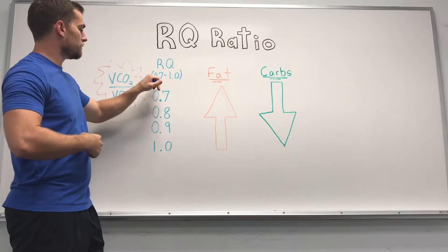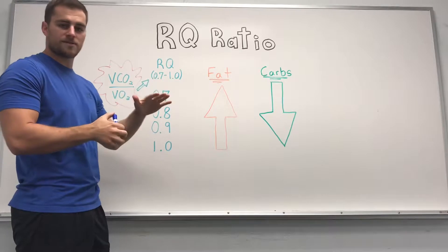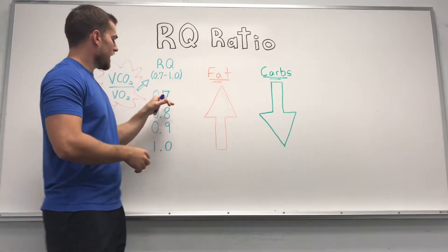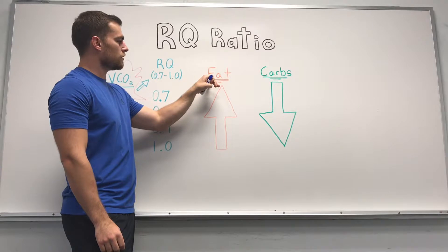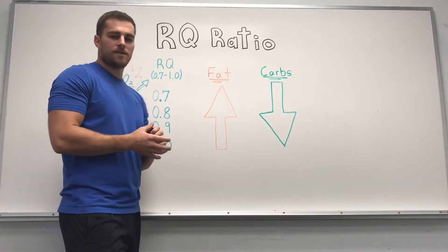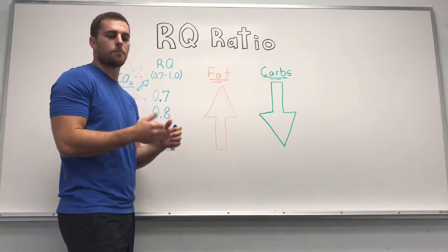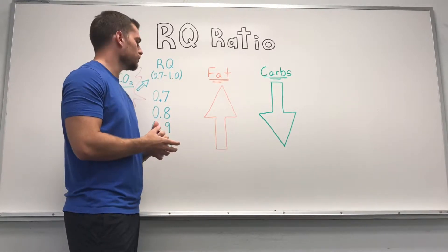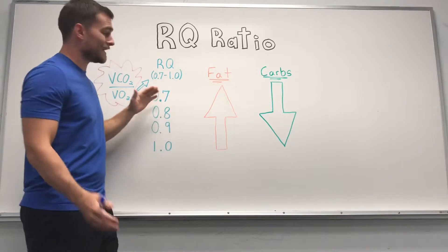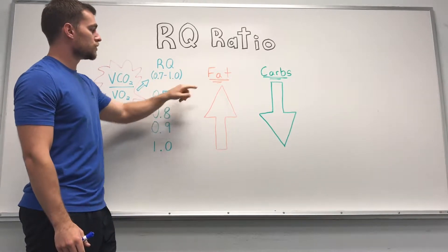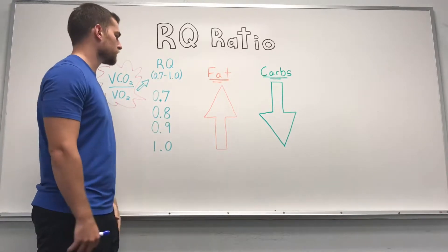RQ is measured from 0.7 to 1.0. At 0.7, on the lower intensity end, you're going to be primarily fat-fueled. Activities where this applies include slow jogging, bike riding, swimming — anything you can maintain for a really long time. Your RQ ratio should be relatively low so that you can support that activity for a long time using your fat stores.